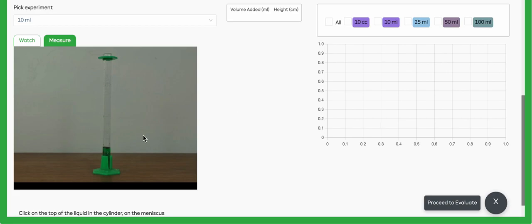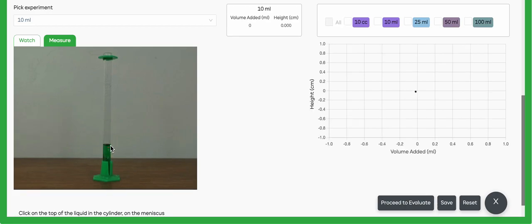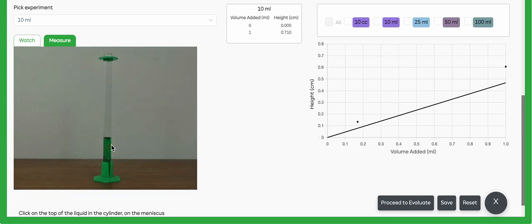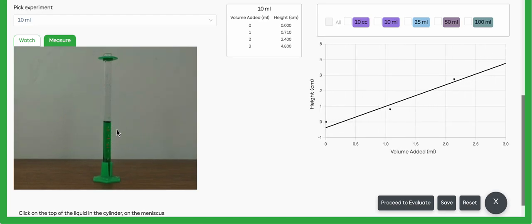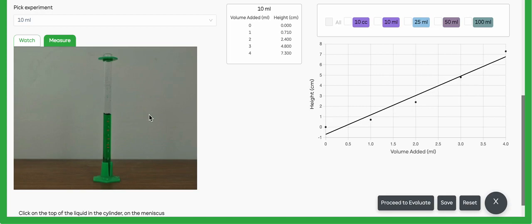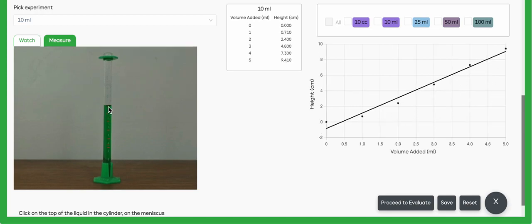We can go ahead and click to make measurements right where I mentioned, on that meniscus of the water. Do your best job. These clicks aren't going to be perfect because it is real data and we're measuring it from the Smart Science system where we have to click to make those measurements.